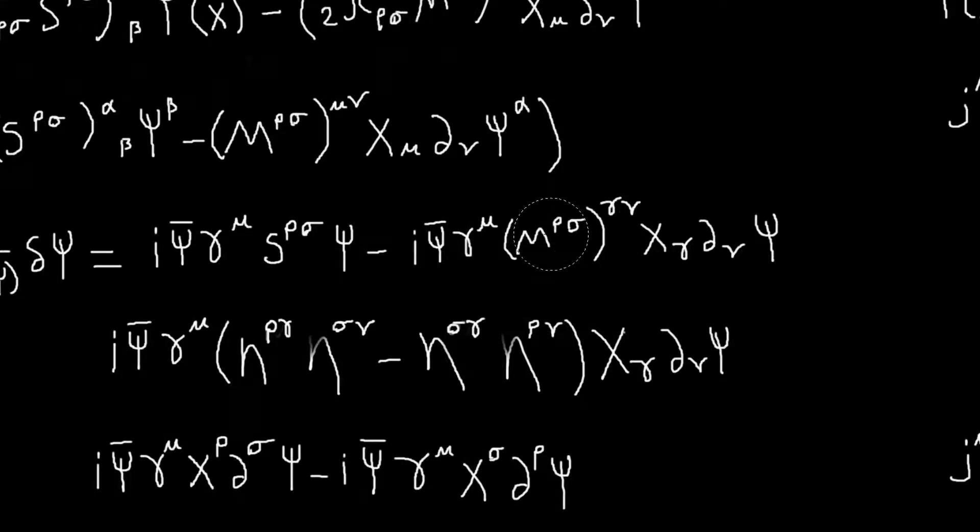Basically this M can be expressed in terms of our metric tensors, our Minkowski metrics. So M^{ρσ}, or so M^{ρσ} and then the γν component of it is this, that's given somewhere in Tom's notes.